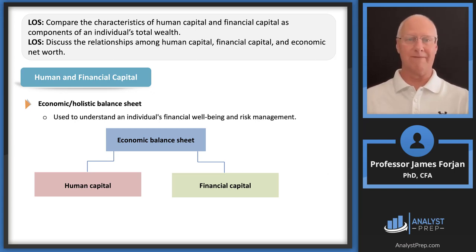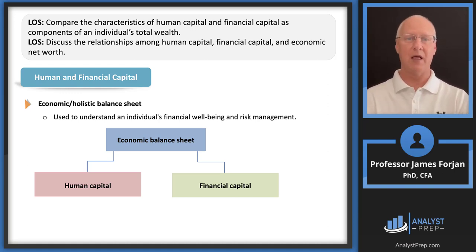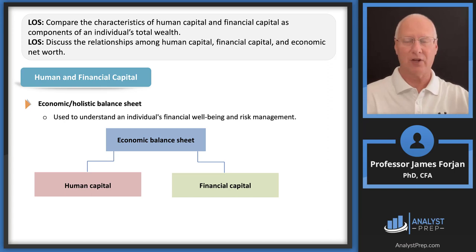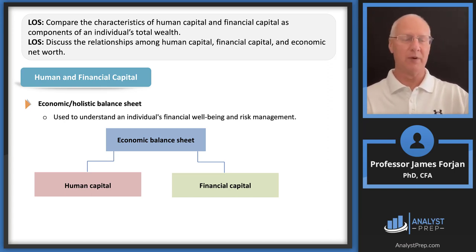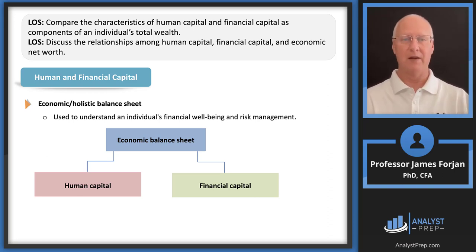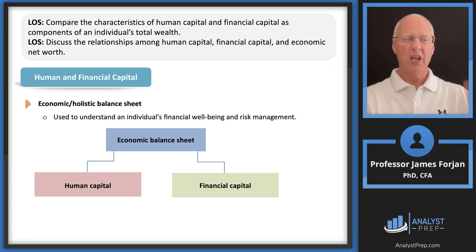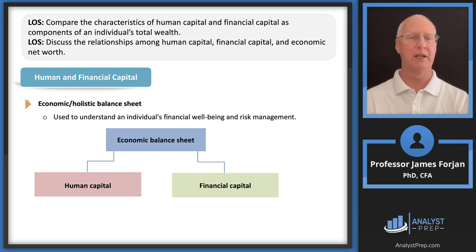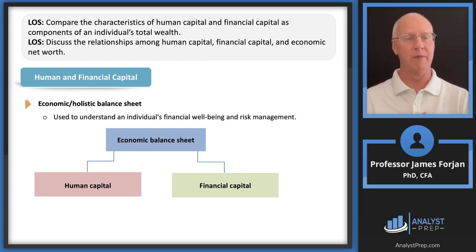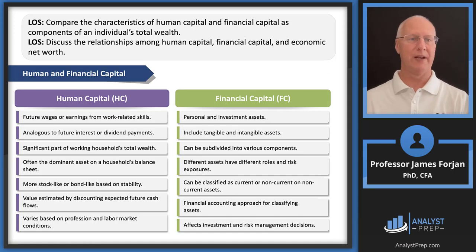The economic balance sheet is virtually identical to the balance sheet studied in financial statement analysis, but instead of business assets like cash and cash equivalents, individuals have things like a car, furniture, and golf clubs as inventory, and long-term assets like buildings and equipment. The big difference between an individual's balance sheet and a business's is that we can separate it into human capital and financial capital.